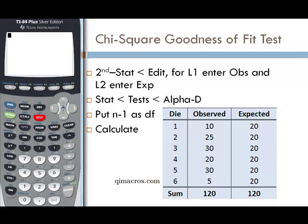Let's first enter data into the list. Press stat, and then edit. We want to enter our observed values into L1 and our expected values into L2.